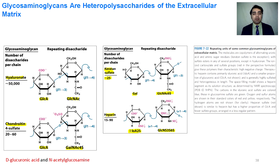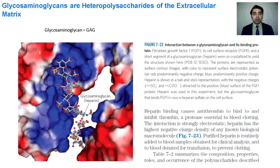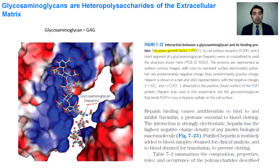Heparin sulfate consists of a dimer from two monomeric units. In this figure, the contour image of fibroblast growth factor FGF1 is shown. The blue region shows positively charged regions and the red region shows the N-acetylglucosamine charged area. The ball-and-stick model shows the partial structure of heparin. When heparin binds to FGF1, it increases cell growth.